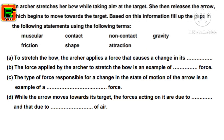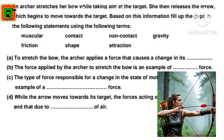Coming to the fourth question: an archer stretches her bow while taking aim at a target, then releases the arrow which moves towards the target. Fill in the gaps using the terms: muscular, contact, non-contact, gravity, friction, shape, and attraction. A) To stretch the bow, the archer applies a force that causes a change in its shape.